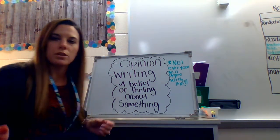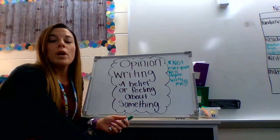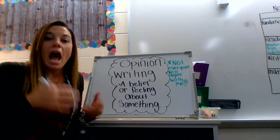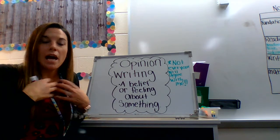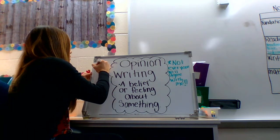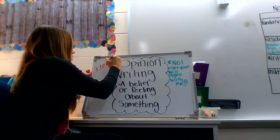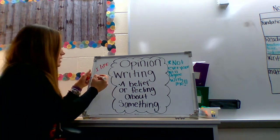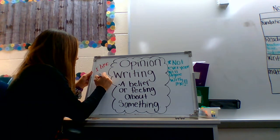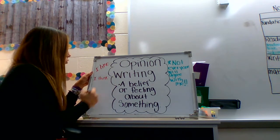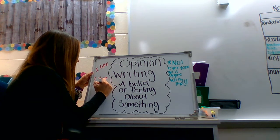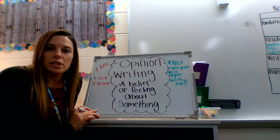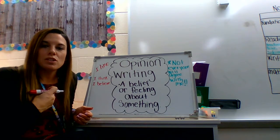So when we write about our opinions, we might use words like 'I like,' because I'm talking about something that I like. Or we could say 'I think,' which would be an opinion statement because we're going to write about what we think, not everybody else. We could say 'I believe' — I believe that dogs are cute. You might not believe it, but that's what I believe.